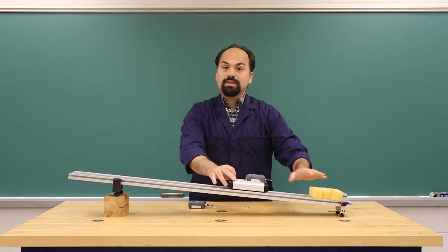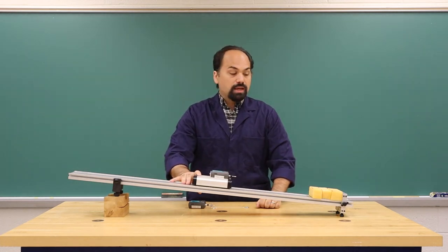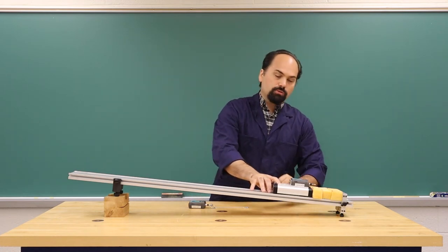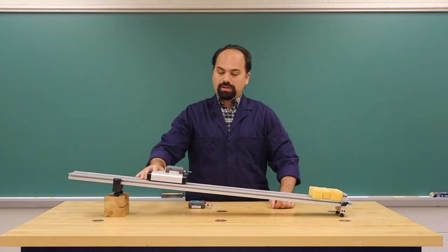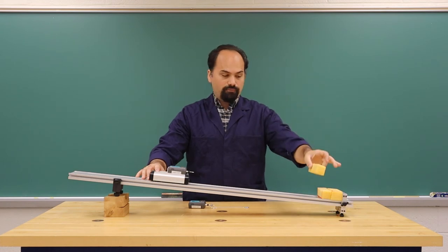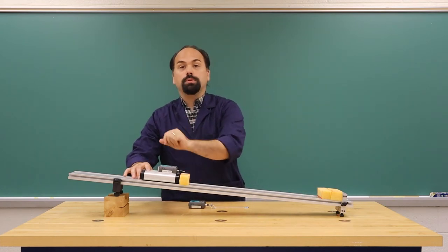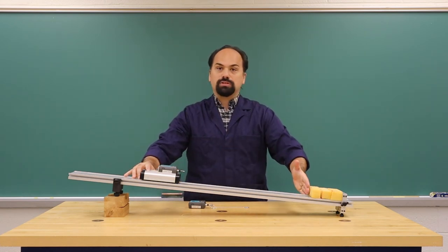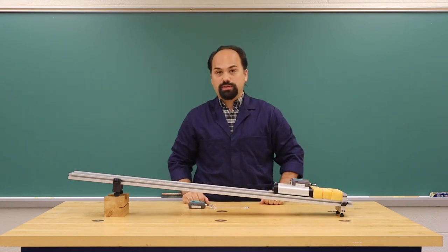One important thing to keep in mind while doing this collision part of the experiment is we want the same velocity at the initial point of impact each time. We can do that by starting the cart at some known position, and then as we add a foam block we will start the cart one foam block higher up the ramp, so we'll have the same amount of acceleration time and should have the same velocity at the point of impact.